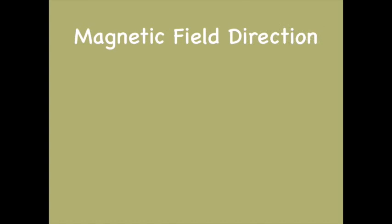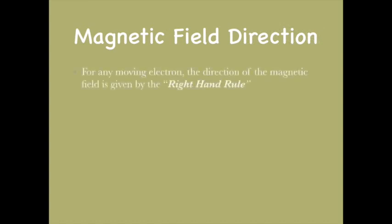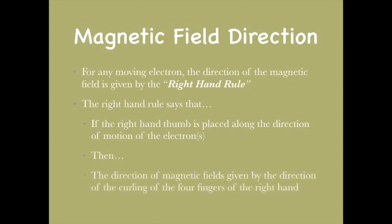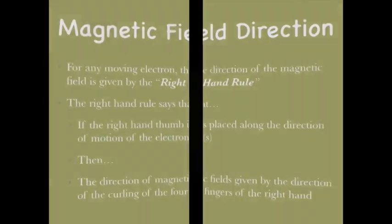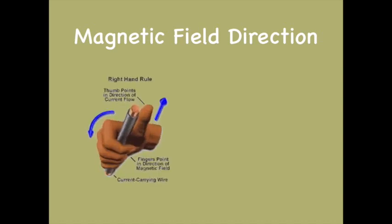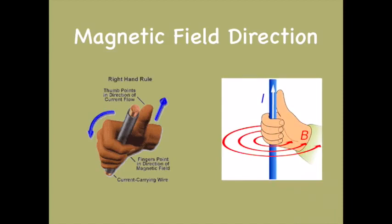Coming to the magnetic field direction: for any moving electron, the direction of the magnetic field is given by the right hand rule. The right hand rule says that if the thumb of the right hand is placed along the direction of the motion of the electron, then the direction of the magnetic field will be given by the direction of the curling of the four fingers of the right hand. For a better understanding, please have a look at the following diagrams — here the thumb shows the direction of the flow of the electrons and the curling of the fingers shows the direction of the magnetic field around it.